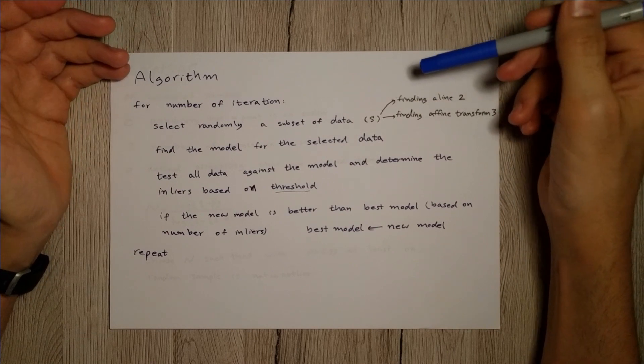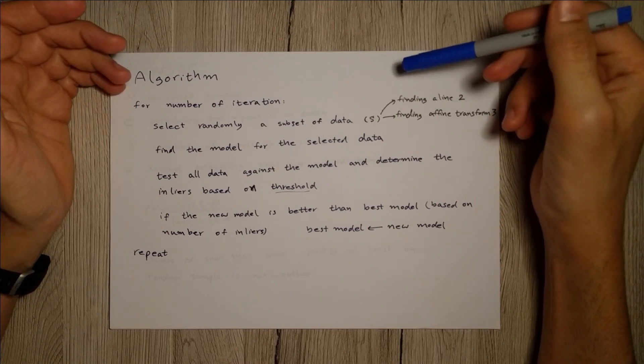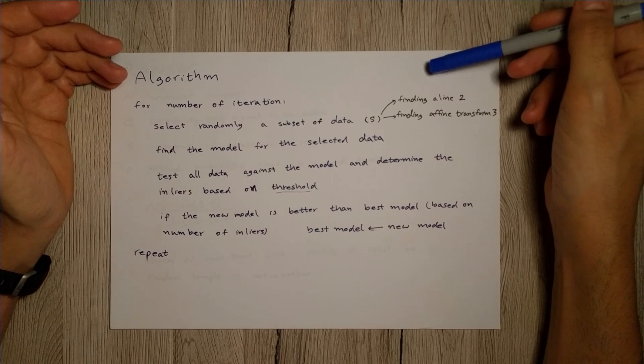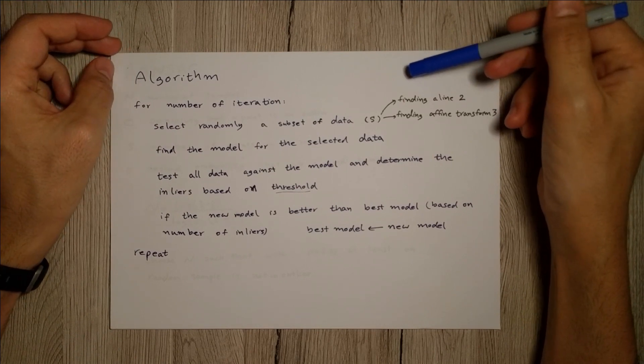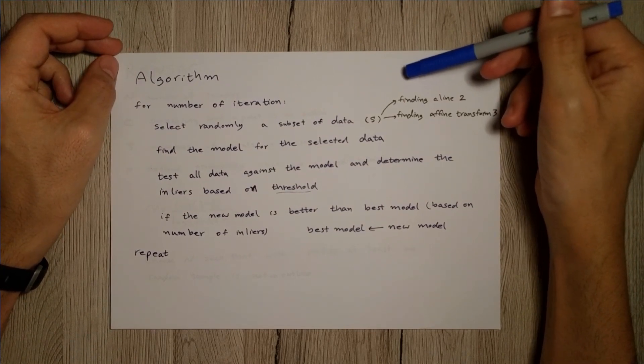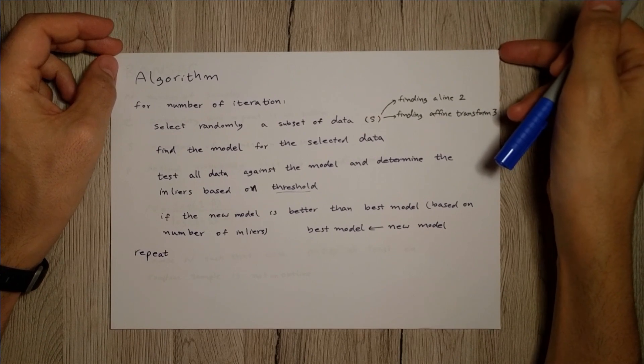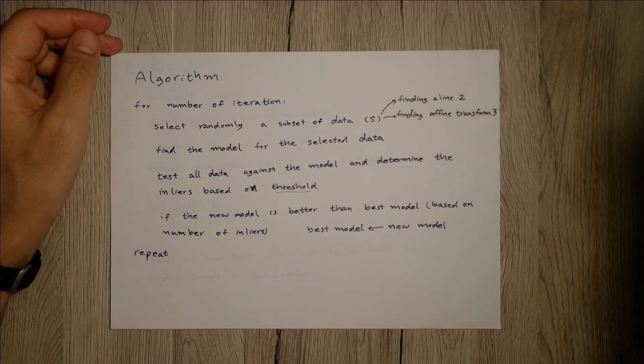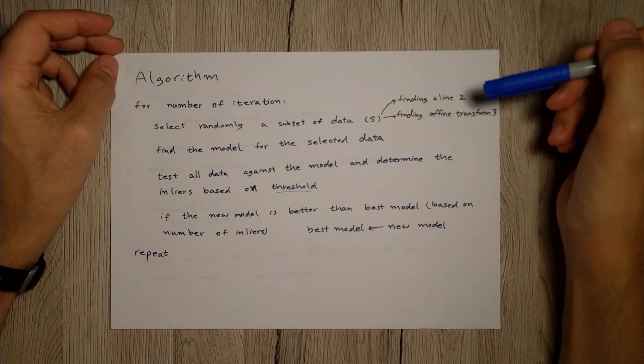Then you compute the distance between what you got and what you had in your pair. And if it's less than that, for instance if it's less than one or two pixels, then you say okay it's valid data, it's an inlier.